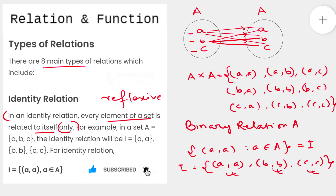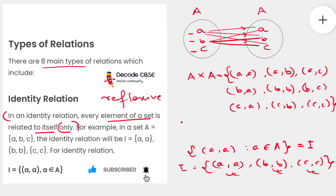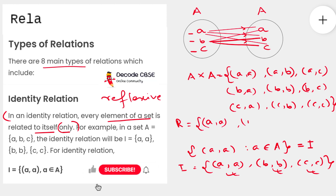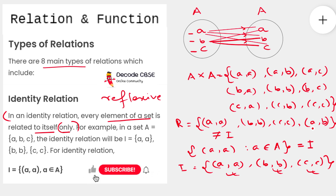Now let's talk about the difference between identity relation and reflexive relation. Many students confuse reflexive relation as exactly similar to identity relation. Consider a relation R containing the three ordered pairs (a, a), (b, b), and (c, c) — this is clearly an identity relation as per our definition. But if we add one more ordered pair, say (a, b), it will no longer be an identity relation because it has an extra ordered pair where the elements are dissimilar.